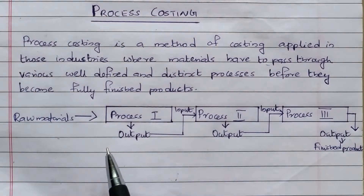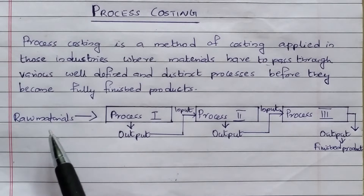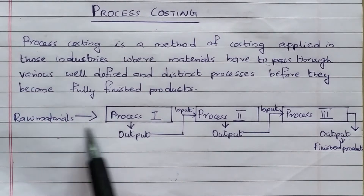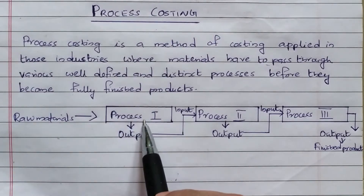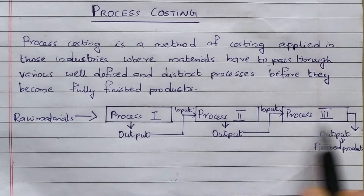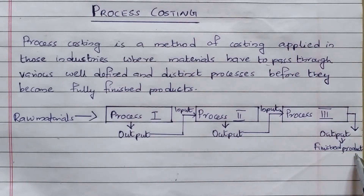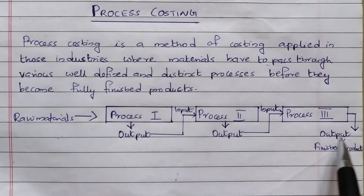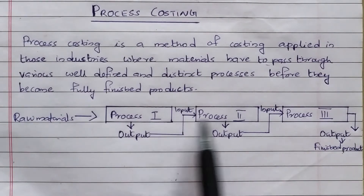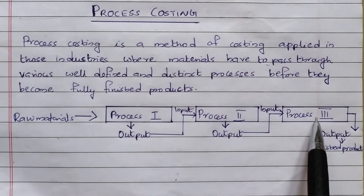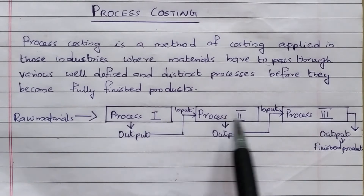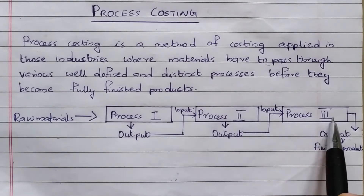Process costing can be shown with a diagrammatic representation. We have raw materials, then Process 1, then Process 2, then Process 3, and the last stage is the finished product. If we are concerned about a finished product in the manufacturing area, there are three different processes involved.